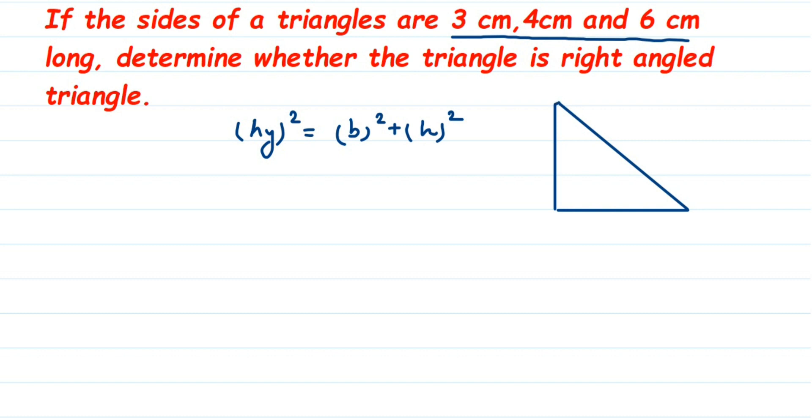Suppose it is a right angle triangle A, B and C and here they have given that it is 3 centimeter, 4 centimeter and 6 centimeter. How to know which side is what? Always when three sides are given and since we are applying Pythagoras theorem here, the longest side, that is AC, is the longest side and angle B is 90 degree.